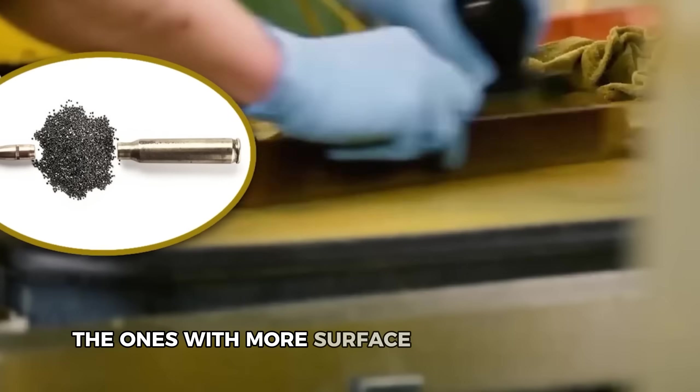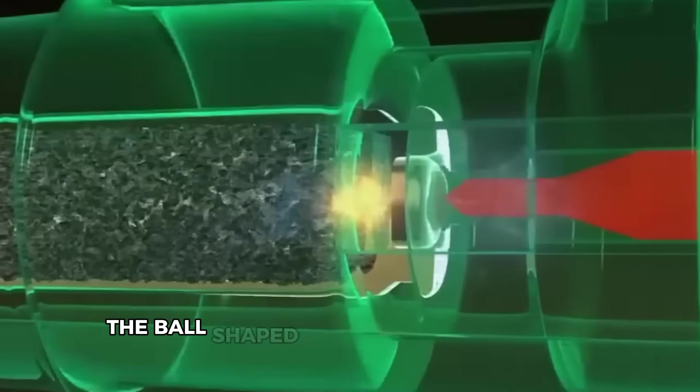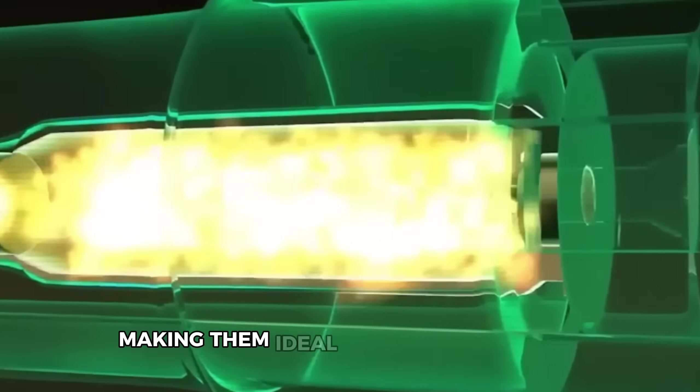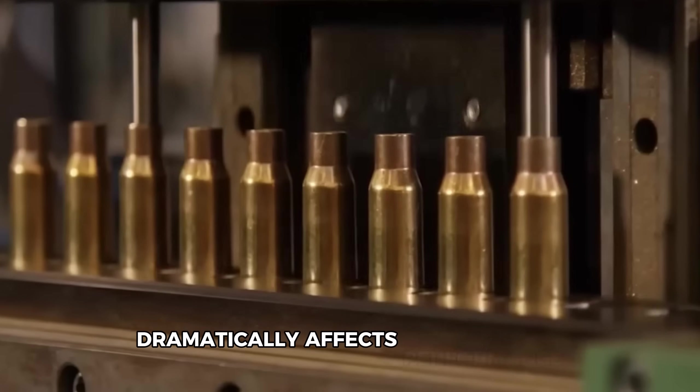See those cylindrical grains with different length to diameter ratios. The ones with more surface area burn faster, creating higher initial pressures, perfect for shorter barrels. The ball-shaped propellants burn more progressively, making them ideal for heavier bullets needing sustained pressure. It's amazing how shape alone dramatically affects performance.